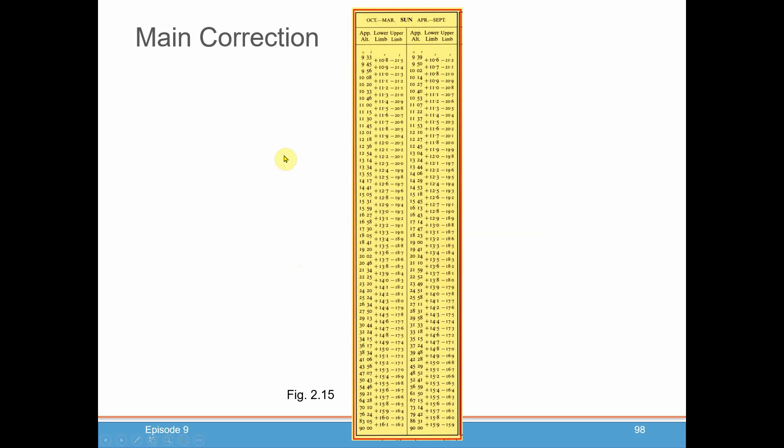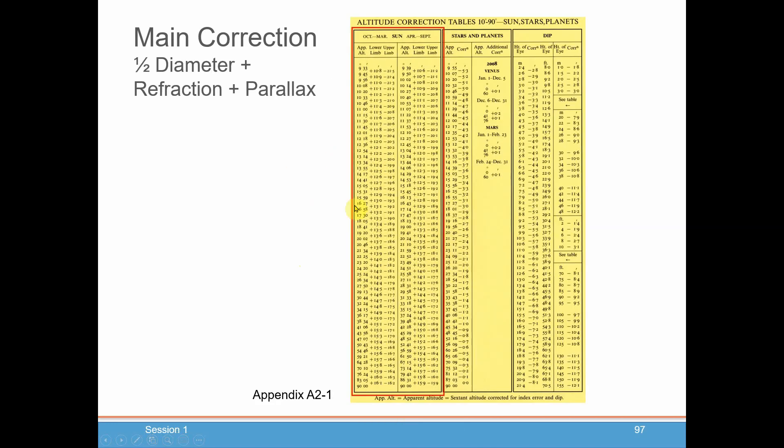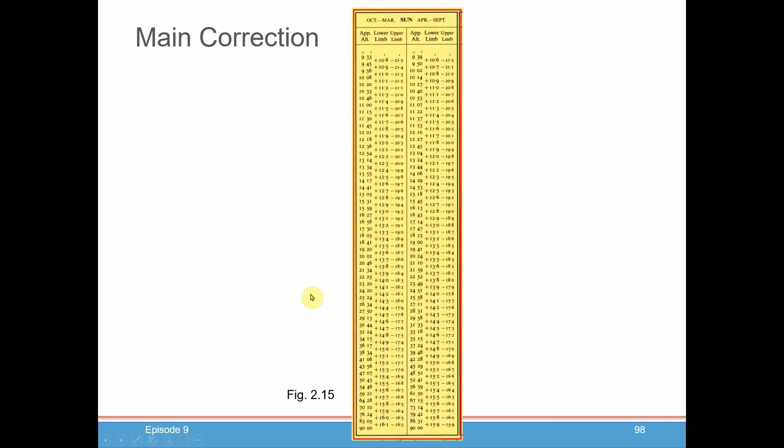And again, let's go back here for one moment. This is on that card I mentioned that comes with the almanac, and you can use it as a bookmark. And it's very handy because it has all of these values that you need pretty much on every single sextant site right in front of you. And again, this is just highlighting that table for you.